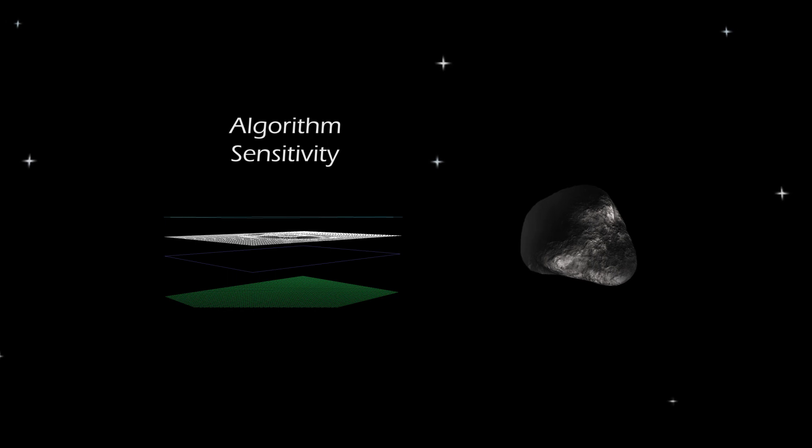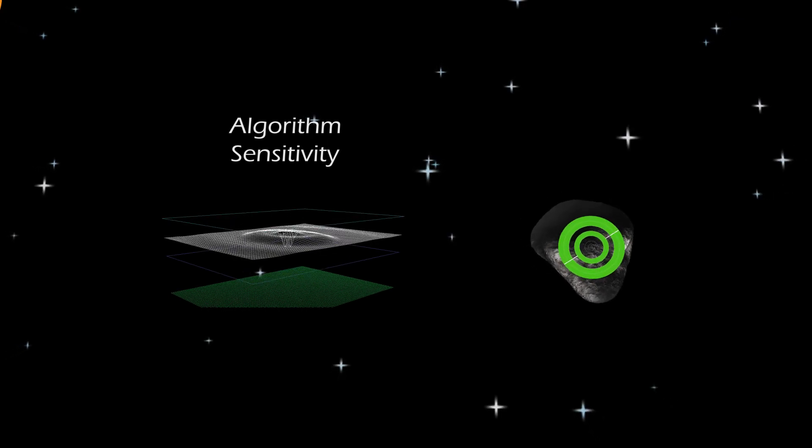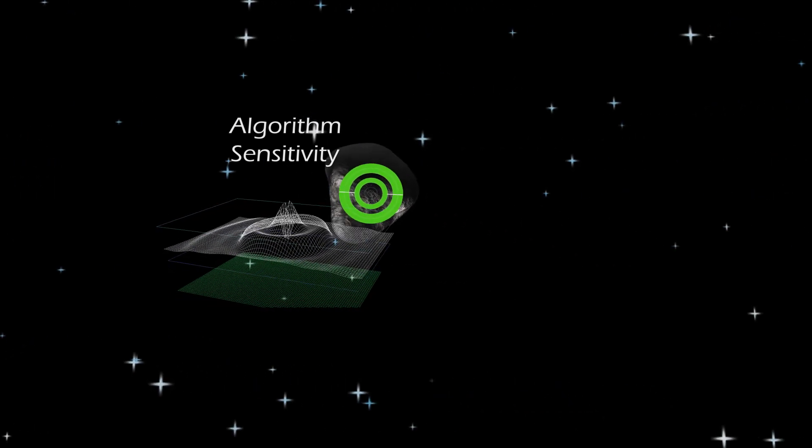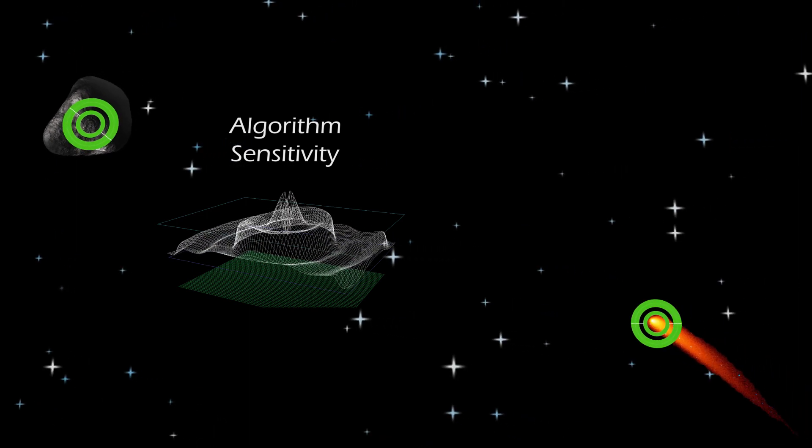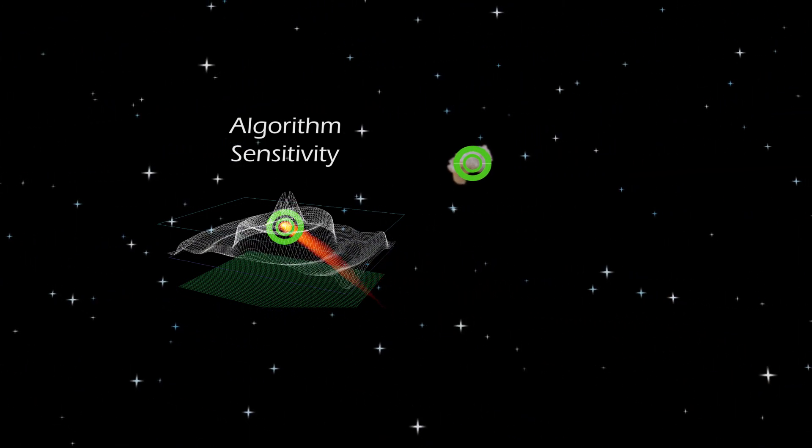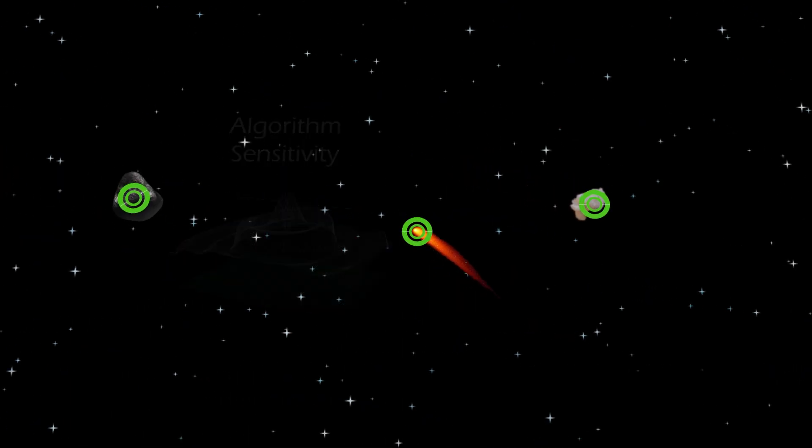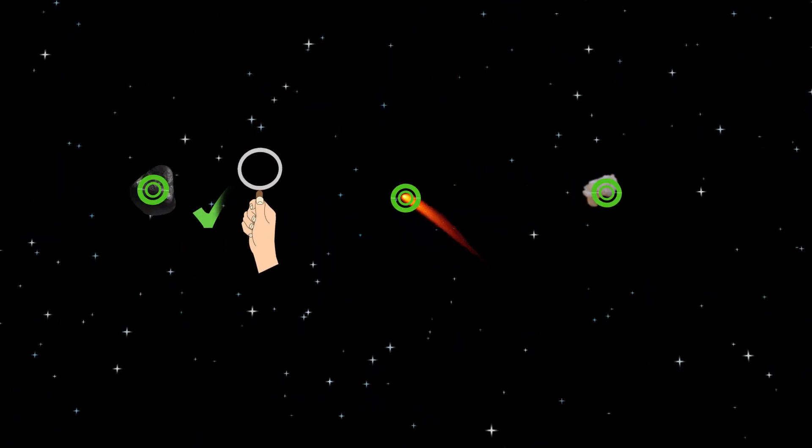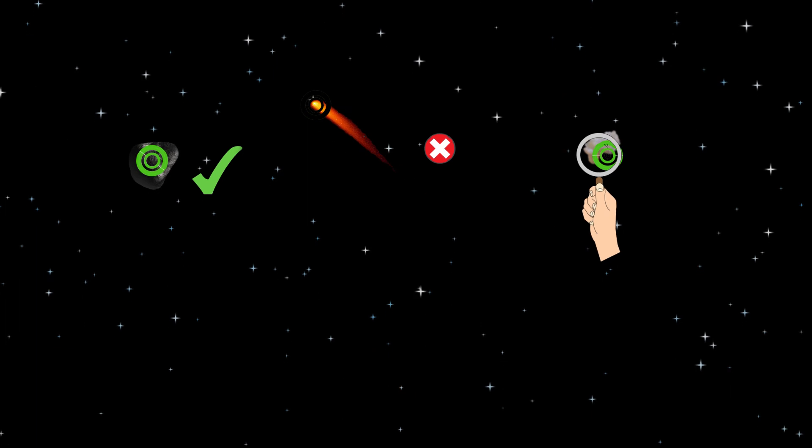The other is if you turn up the sensitivity on these algorithms, you end up with a lot of detections called false positives, where the computer mistakenly thinks some noise in the image or a speck of dust in the lens of the telescope is an asteroid. This causes a lot more work for the scientists who have to go back over all these images and correct any of those false positives.